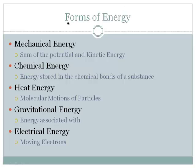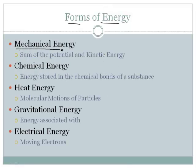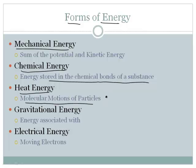There's also forms of energy. Don't get this confused with the types of energy. There is mechanical energy, which is the sum of the potential and the kinetic energy. There's chemical energy, energy stored in the chemical bonds of a substance. There's heat energy from the molecular motion of particles, that vibrational energy we talked about earlier. There's gravitational energy, energy associated with gravity, basically position in relation to a substance. And then there's electrical energy, energy associated with the moving electrons in a substance.